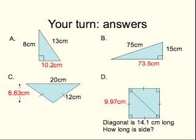Here are the numerical answers. The first two are straightforward: 10.2 and 73.5. For C, the short side you know is 10cm and the long side is 12cm, so you get 144 minus 100, and 6.63 is the square root of 44. For problem D, you square 14.1 and then divide it by 2, sharing the square equally between the squares of the two short sides. You then take the square root, and as you can see, it's very nearly 10cm.